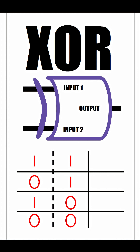The XOR gate only turns on when exactly one input is on. So what would happen when we have the inputs 1 1? It would turn off because more than one input is on. For 0 1, we get a 1 because exactly one input is turned on. The same would go for 1 0. For 0 0, it would simply be off because no inputs are on.